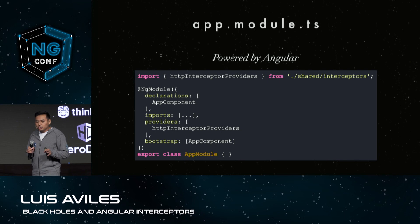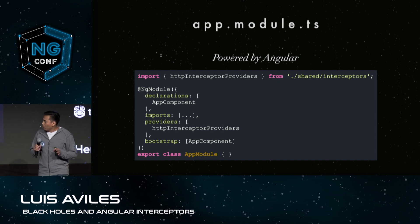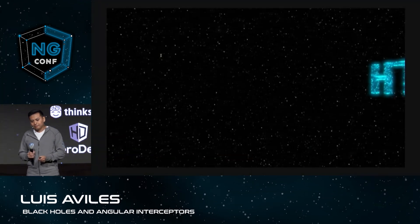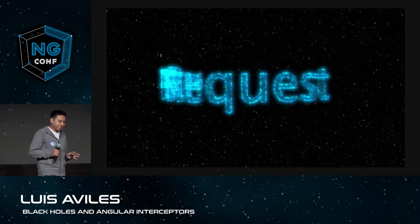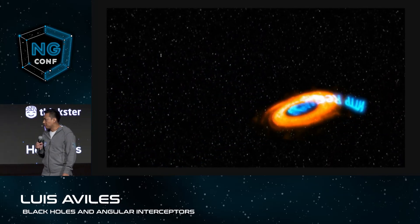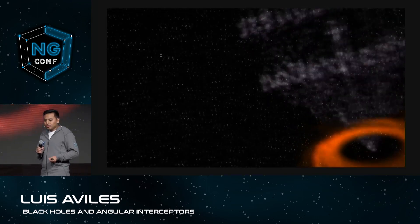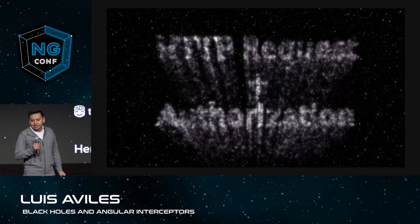Finally, we can use it as part of the providers array inside of the application module. In this way, we can add more than one Angular interceptor in the future without having to update the app module again. If we run this code, we'll see that every HTTP request of our Angular application is going to be intercepted. This service is going to transform every request and the result will be the same HTTP request plus an authorization header, as you can see here.